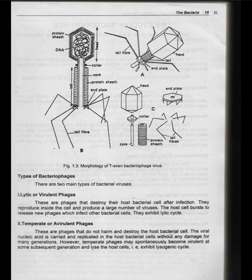Types of bacteriophages: There are two main types of bacteriophages — lytic or virulent phages, and temperate or avirulent phages. Lytic or virulent phages are those that destroy their host bacterial cell after infection. They reproduce inside the cell and produce a large number of viruses. The host cell bursts to release new phages, which infect other bacterial cells.